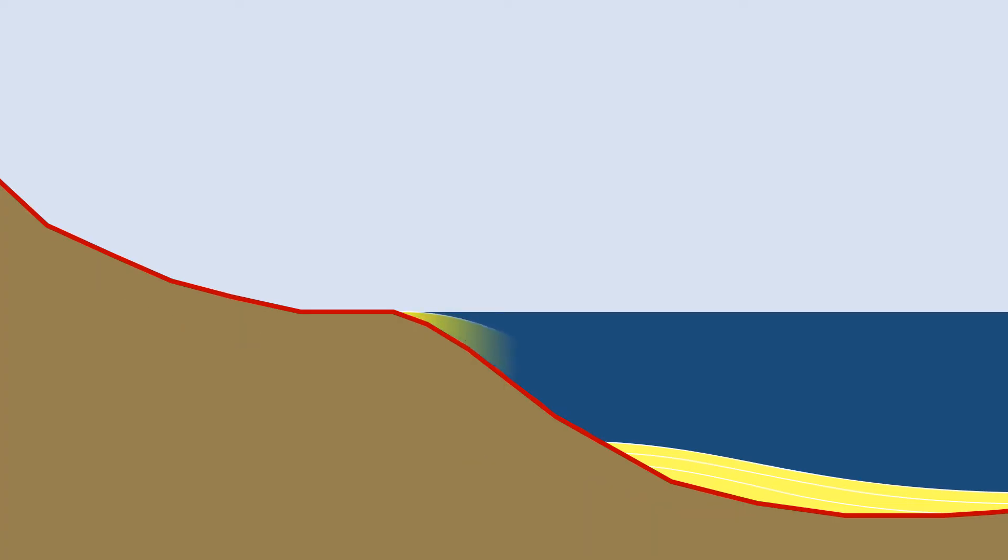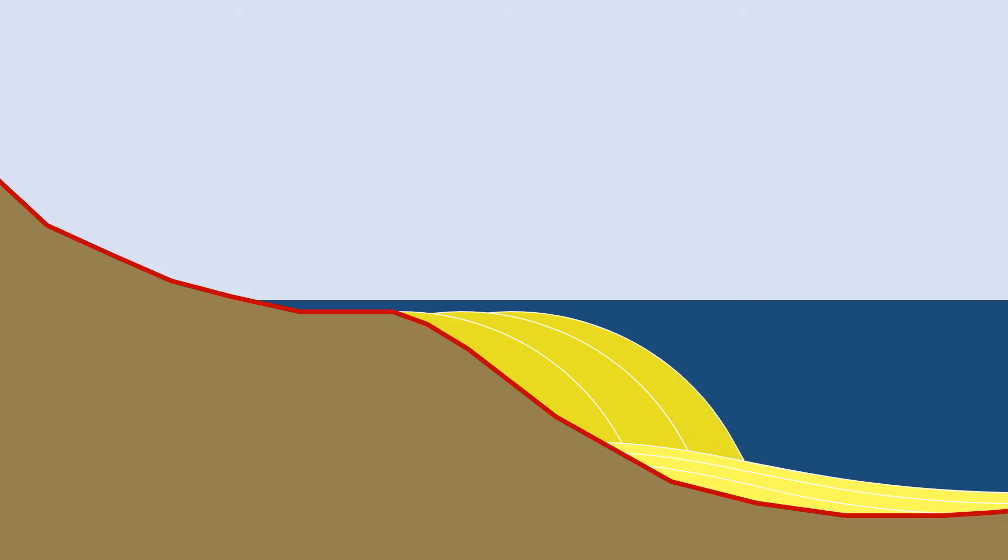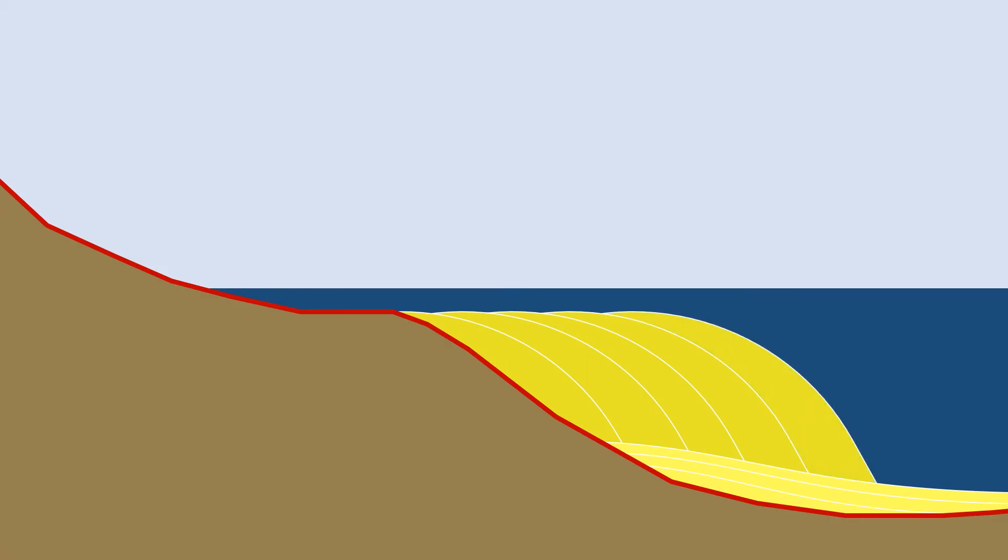The sedimentary layers deposited on top of the sequence boundary when sea level is low are collectively called the lowstand systems tract. During this systems tract, sea level is rising but slowly, and the erosion of the shelf is providing a large supply of sediment to the basin. This sediment builds up as a basin floor fan made of turbidites that progrades out toward the sea. The facies shallow upward through the sequence.